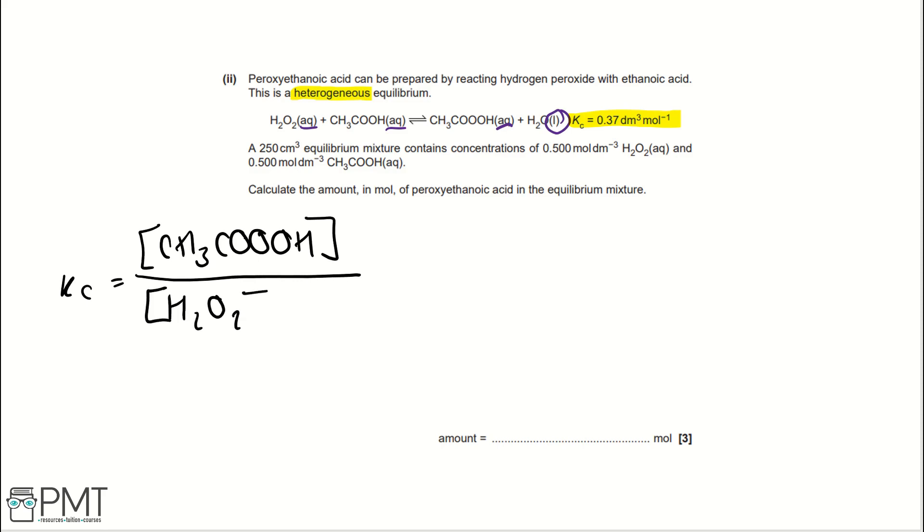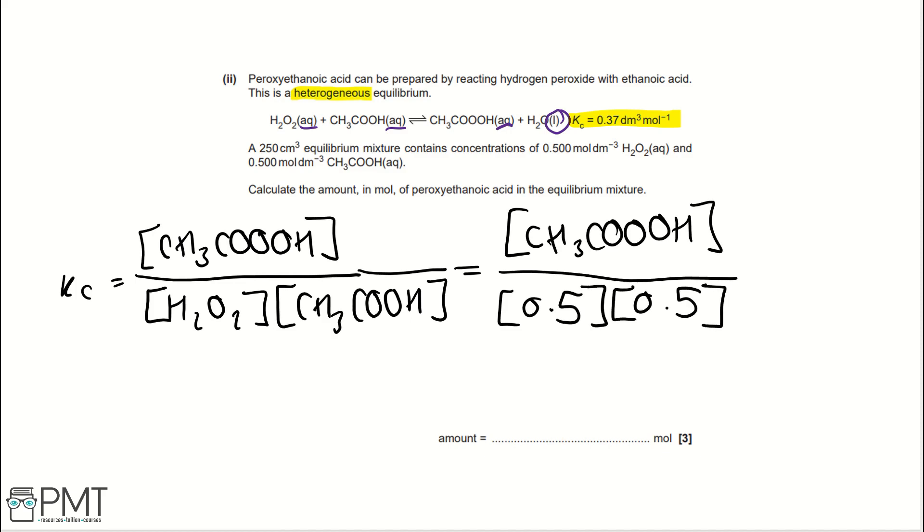When writing an expression for Kc, because we're given Kc here, we use the same states. So, our expression for Kc would be that peroxyethanoic acid, because we work backwards when writing an expression for Kc, over hydrogen peroxide multiplied by ethanoic acid. If we plug in values for this, the square brackets in Kc, they mean concentration, and we've got values for concentration. So, rewriting Kc, we have peroxyethanoic acid over 0.5 and 0.5 again. We also know that this equals 0.37. So, if we rearrange this to get the concentration of peroxyethanoic acid, we would write 0.37 multiplied by 0.5 squared, and that gives us 0.0925 moles per decimetre cubed.